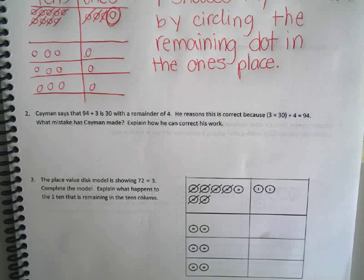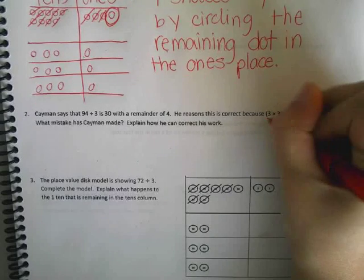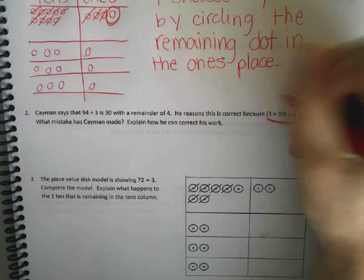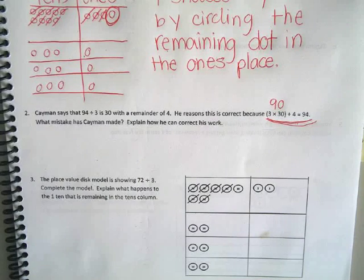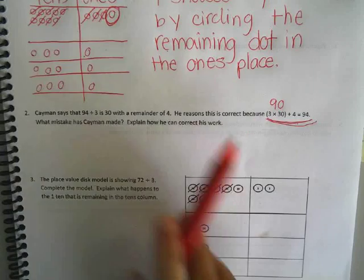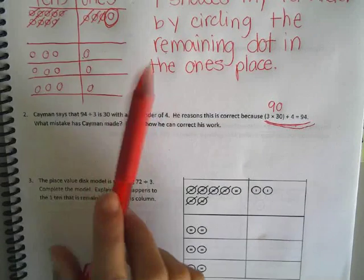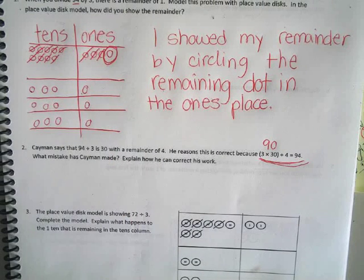That's kind of tricky — we've never looked at a problem like this before. Is this right? No. What's 3 times 30? 90. And what's 4 more? 94. But we know that this isn't right. Because we know what our remainder for this problem is — one.